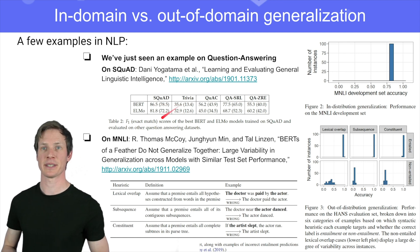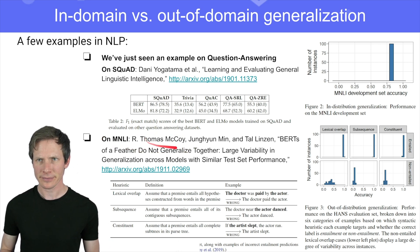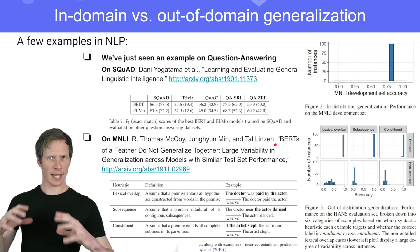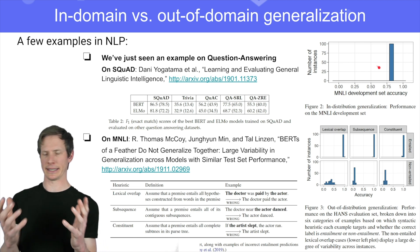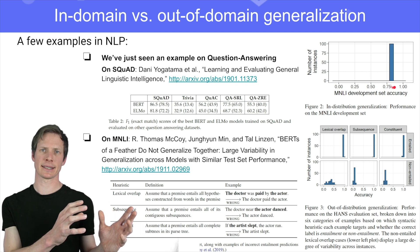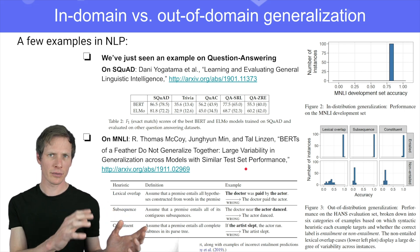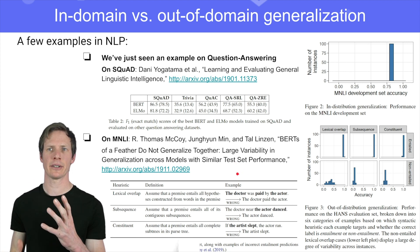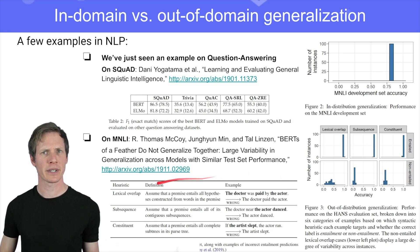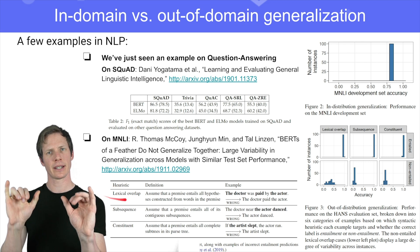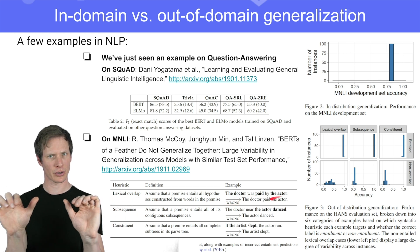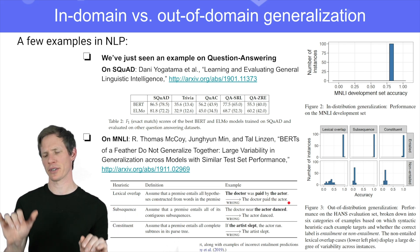Here is another nice example from a paper by Thomas McCoy, which shows that if you train BERT and it has good performance on your fine-tuning dataset like GLUE, you can then test it on another dataset which is out-of-domain. How they defined out-of-domain here is by using some heuristics. For instance, lexical overlap heuristics. In MNLI, you have two sentences and you have to say if one entails the other or contradicts the other.